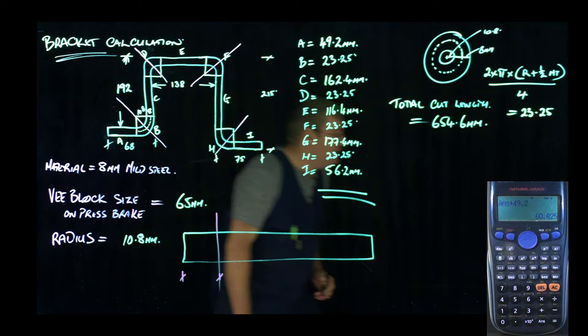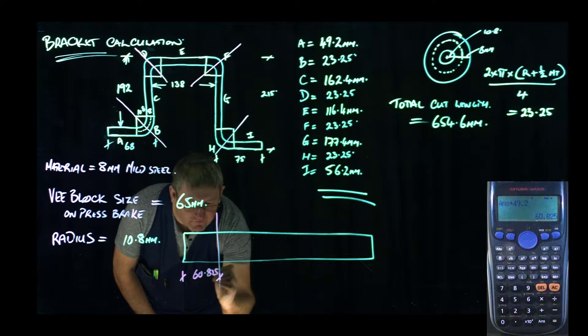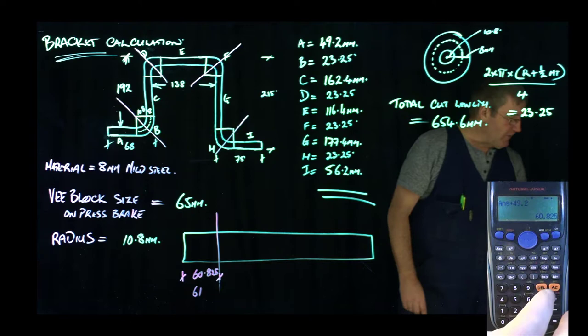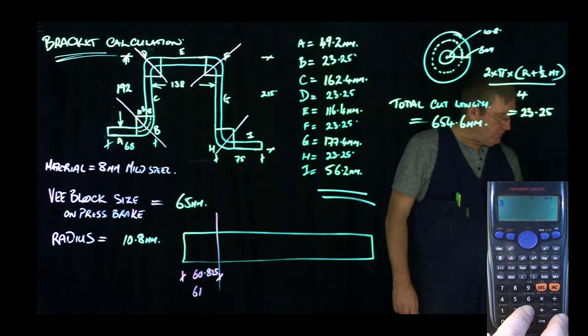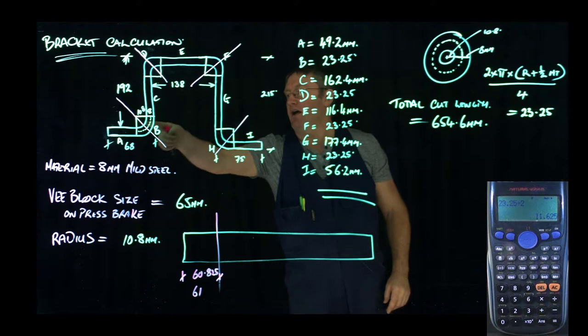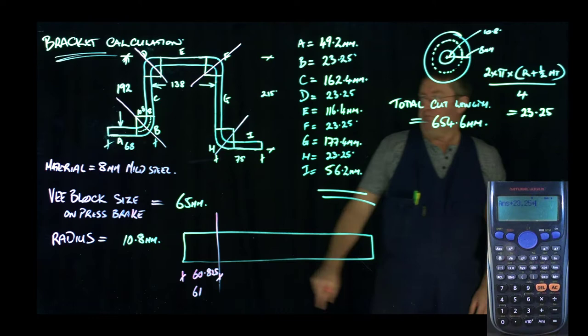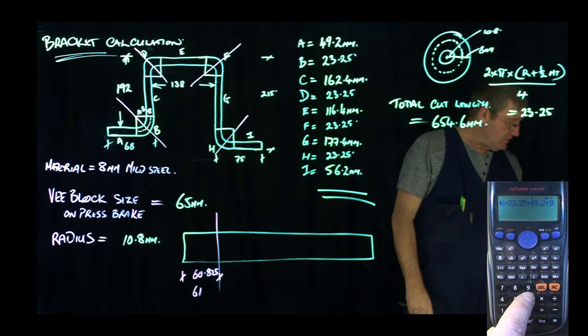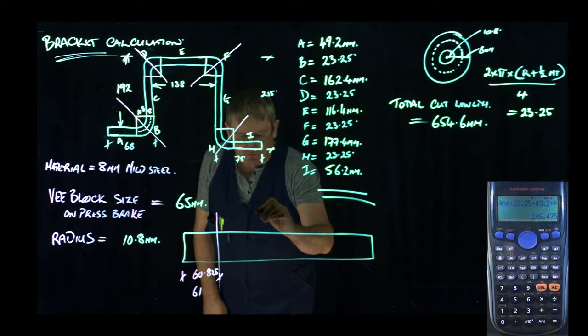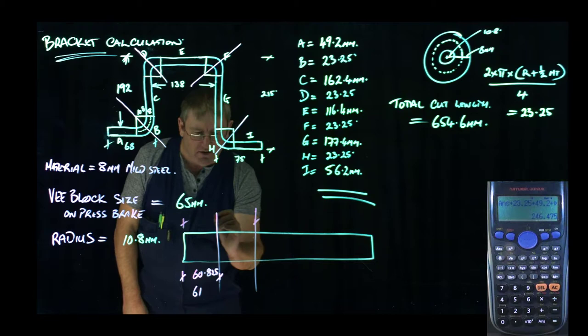So the next position for our next fold is going to be this straight, a full bend, this straight and half a bend. So on the calculator, I'm going to go back 23.25 divided by 2. That gives me half this bend here. I'm going to add the full bend in there of plus 23.25. Plus my first straight, which is 49.2. And my second straight here, C, which is 162.4. So my next fold position on the bar, I'm not going to draw this in proportion. Going from this end to this point here is 246.475. So you'd round that to 246 from there to there.